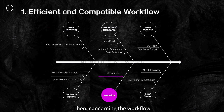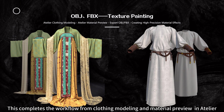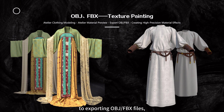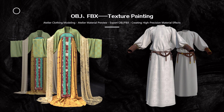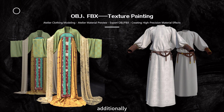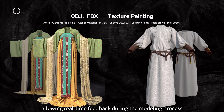Concerning the workflow, models created in Atelier can be exported in OBJ or FBX formats. This completes the workflow from clothing modeling and material preview in Atelier to exporting OBJ/FBX files and creating high-precision material effects. Both formats perfectly encapsulate rational topological structures, proper UV mapping, and accurate thickness and normal information. Additionally, Atelier's material preview utilizes V-Ray rendering, providing excellent lighting and shadow effects that closely resemble external rendering results, allowing real-time feedback during the modeling process.